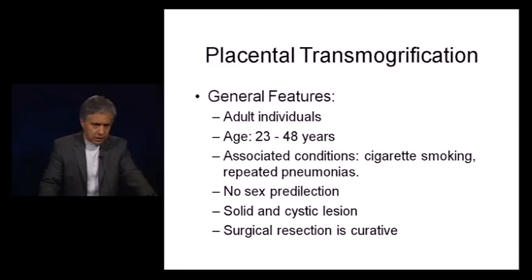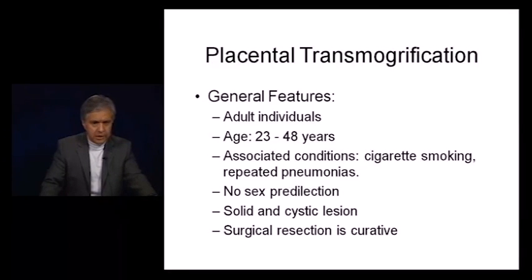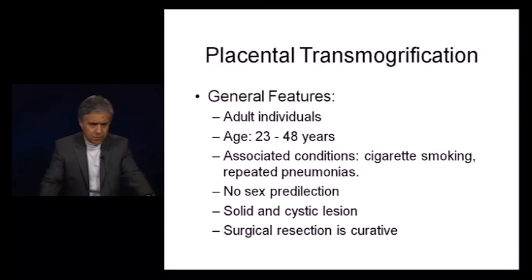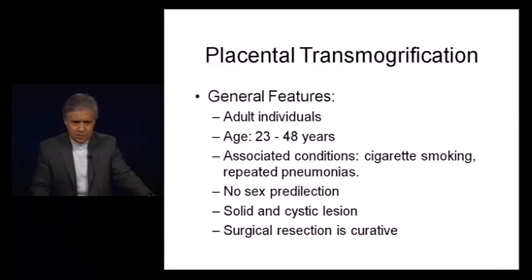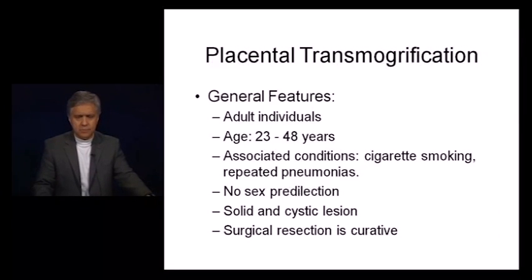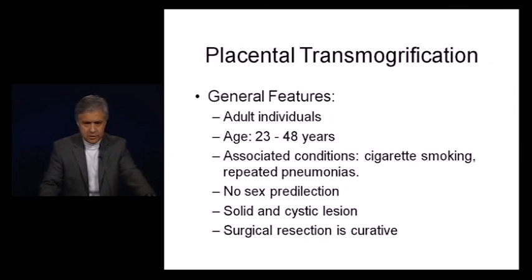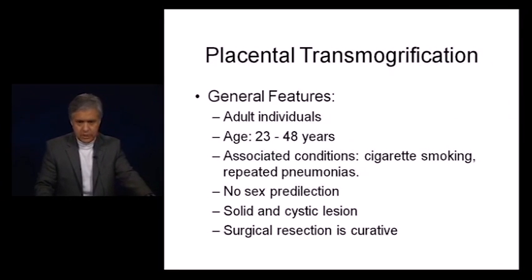Clinically, it has been described essentially in adult individuals ranging from 23 to 48 years of age. All of these patients have had associated conditions including cigarette smoking and repeated pneumonias, which is probably why the gross appearance looks like something that has degenerated in the lung parenchyma. There is no gender predilection. The lesion can have a solid and cystic appearance, and surgical resection is curative and is the treatment of choice.